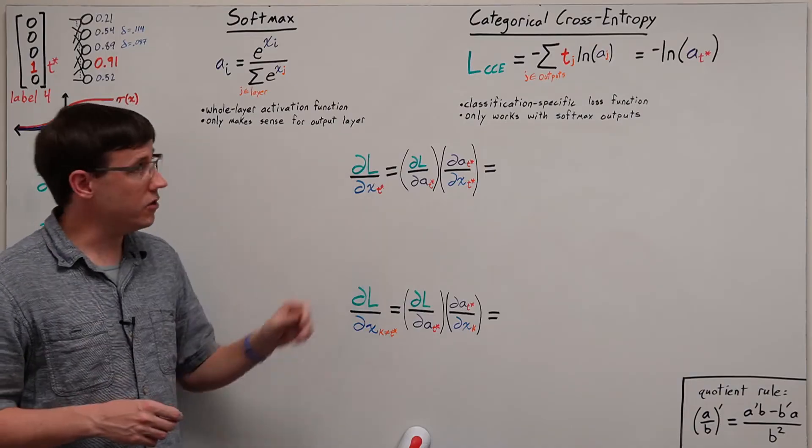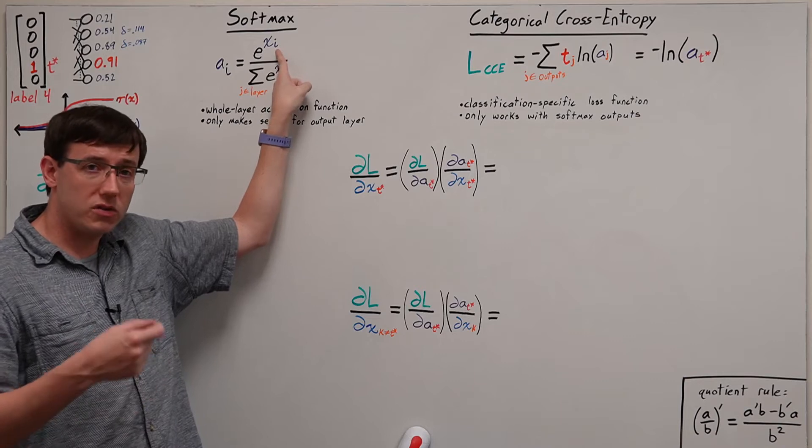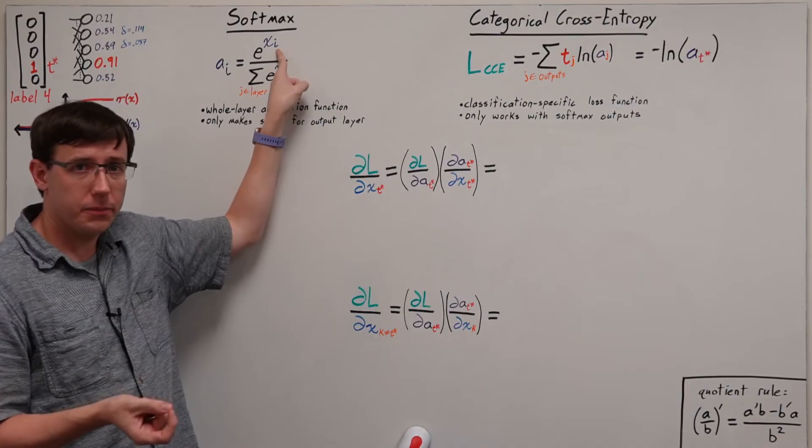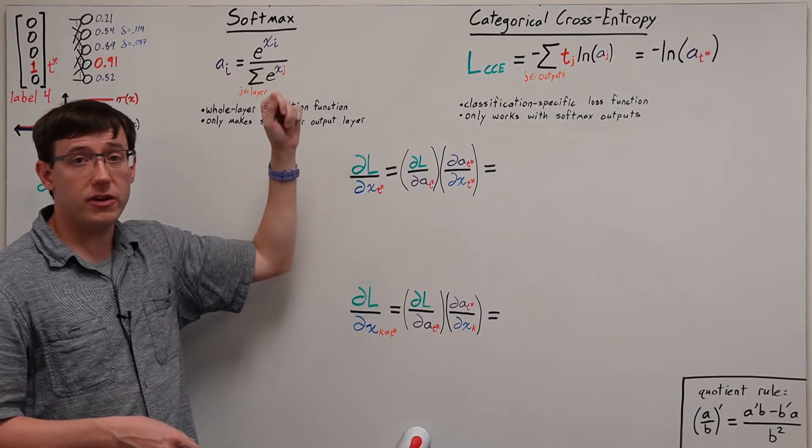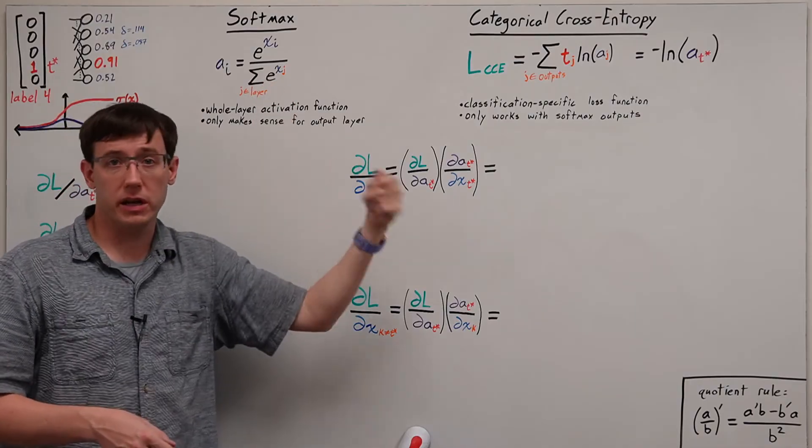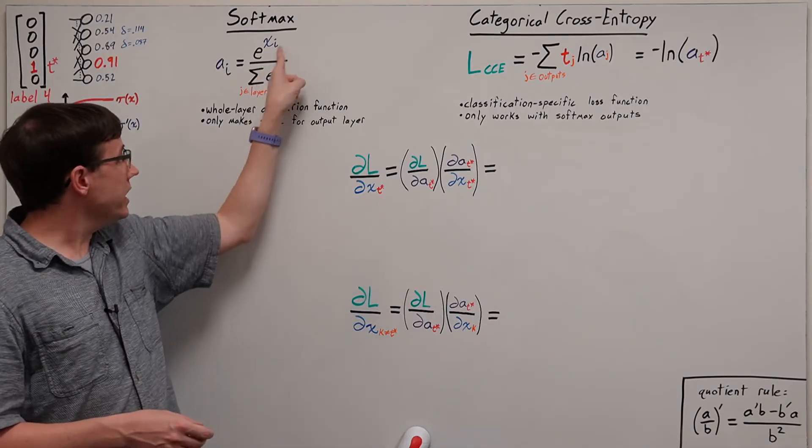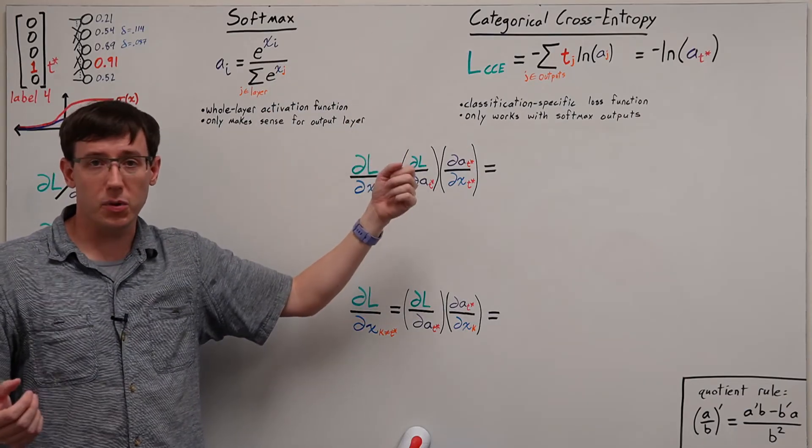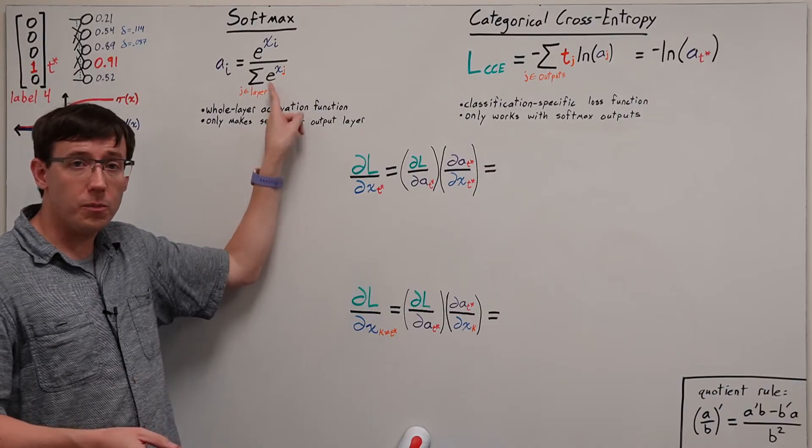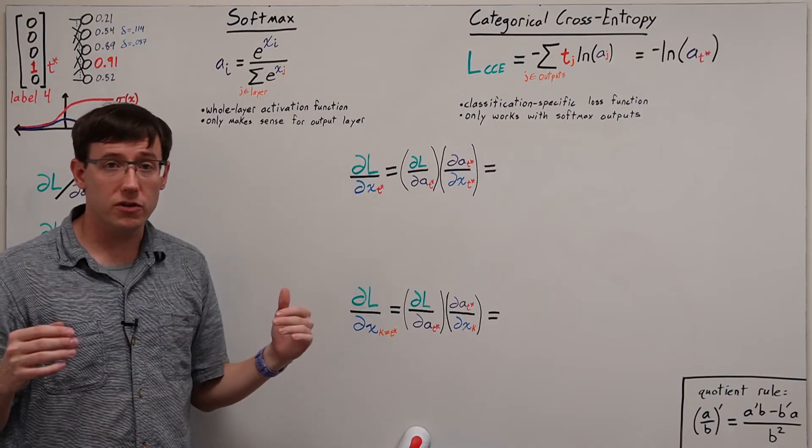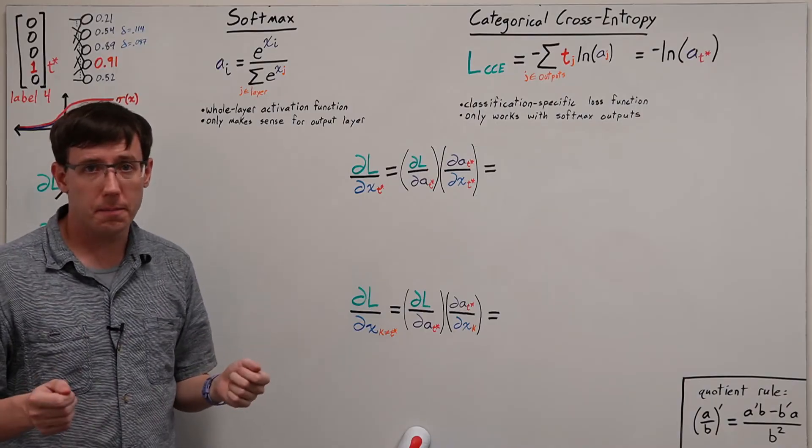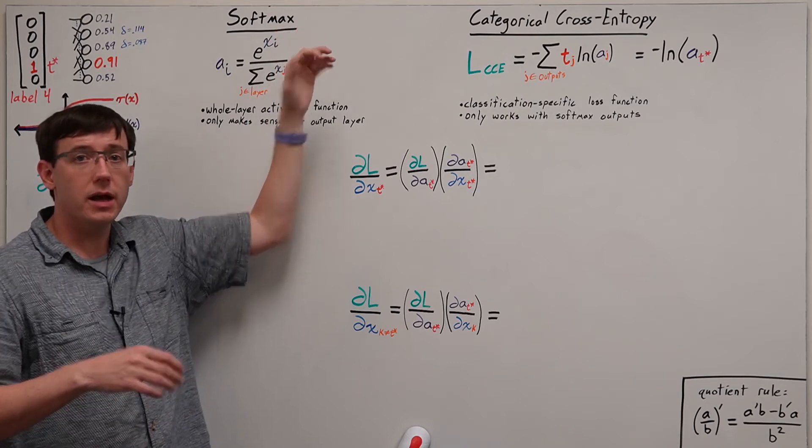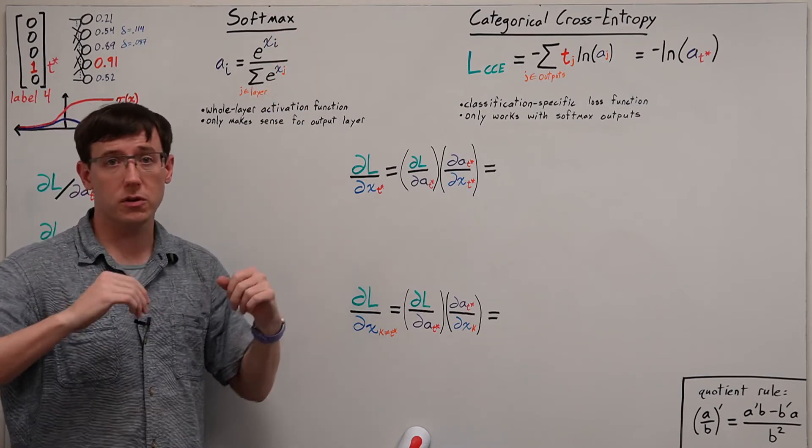To compute softmax activations, we take the weighted sum of inputs, xi, for each node i in the output layer. We then divide them all by the sum of all those exponentiated inputs. The result is that raising e to each of these inputs will magnify differences between the inputs, and then dividing by the sum will normalize all of the activations so that they add up to one. This has the result of pushing the largest input towards one, and pushing the other inputs closer to zero.